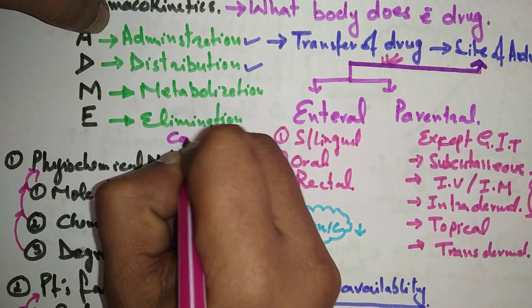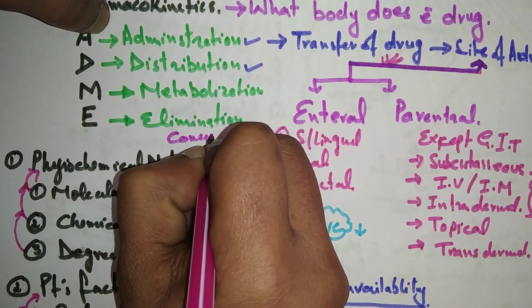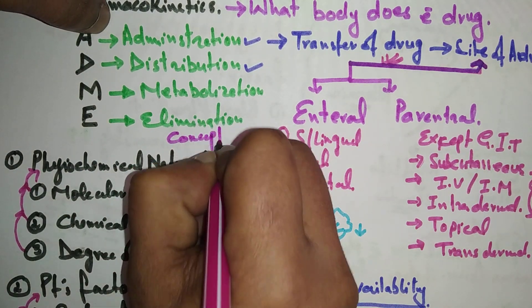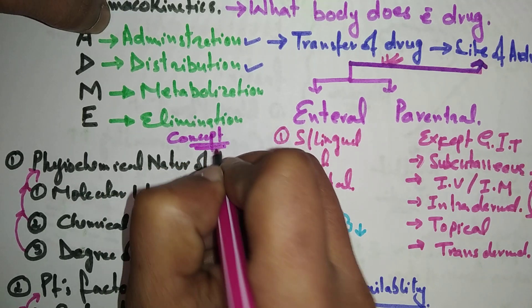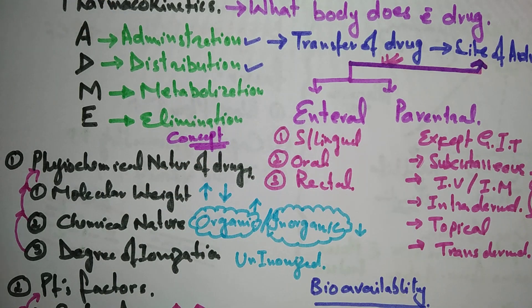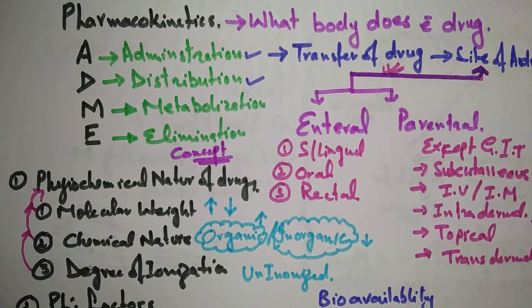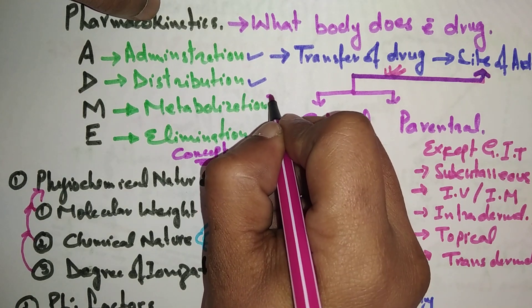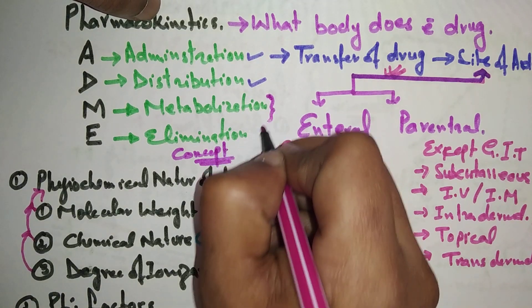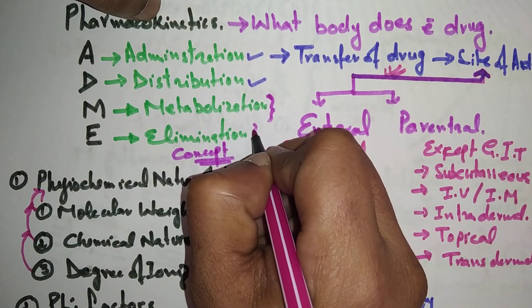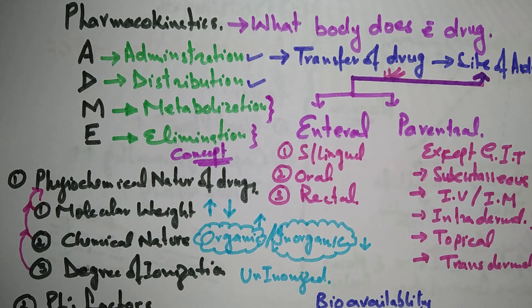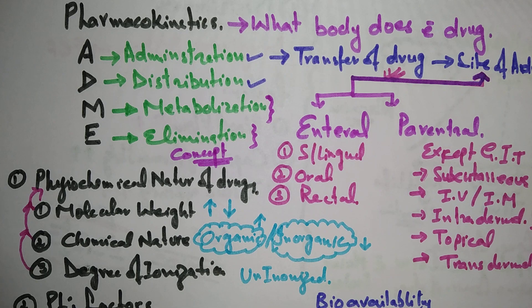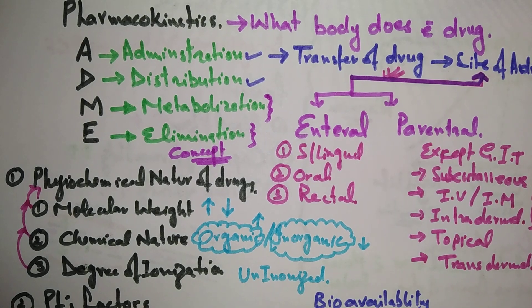So this is the first part of pharmacokinetics — a brief concept of administration and distribution. Next we will cover metabolization of the drug and elimination of the drug. Thank you so much, goodbye.